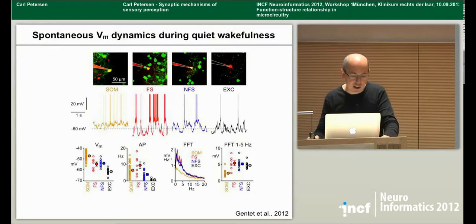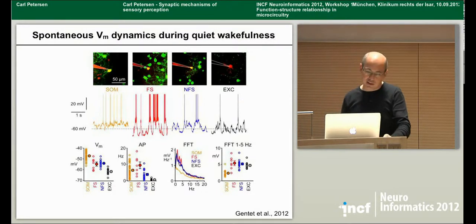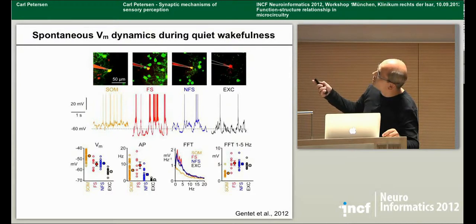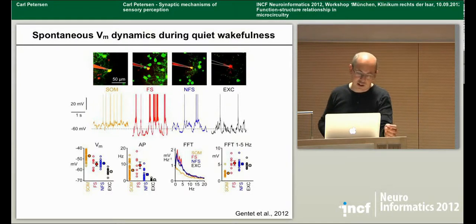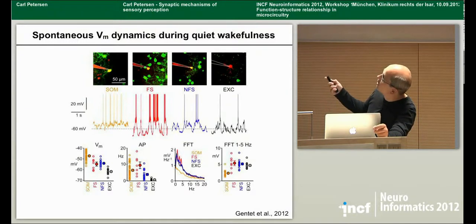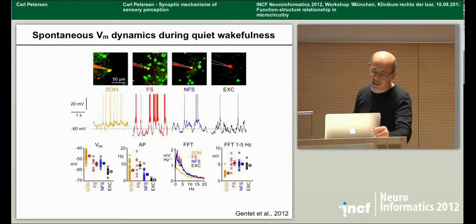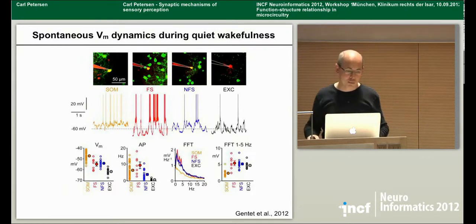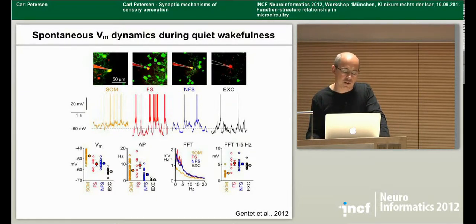Somatostatin neurons seem to have unique membrane potential dynamics compared to all other neuron types recorded in the superficial layers of the neocortex. They're also the most depolarized neurons of all — more depolarized than the other GABAergic neurons, which are themselves much more depolarized than excitatory neurons. Both somatostatin and fast-spiking GABAergic neurons are firing spontaneously at quite high rates, which is different from excitatory neurons, which are almost silent under these conditions with a median spike rate of 0.1 Hz during quiet wakefulness.